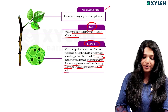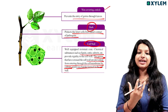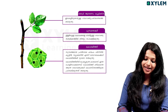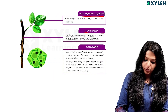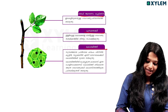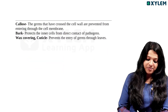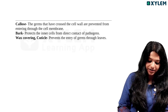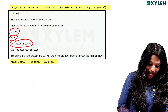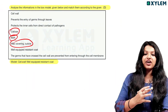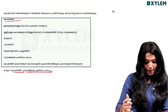Germs that have crossed the cell wall are prevented from entering through the cell membrane by callose — a polysaccharide formed in the cell wall. In the cell wall, callose provides extra support to prevent these germs. The germs that have crossed the cell wall are prevented from entering through the cell membrane — that is why we are talking about callose.